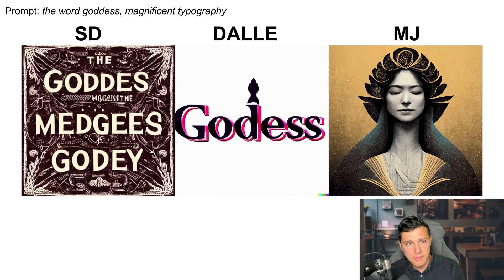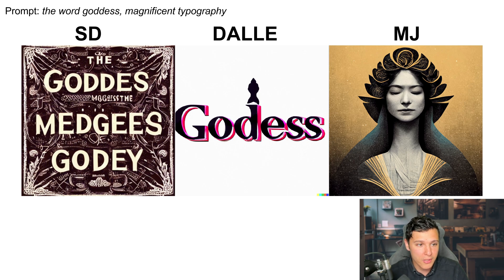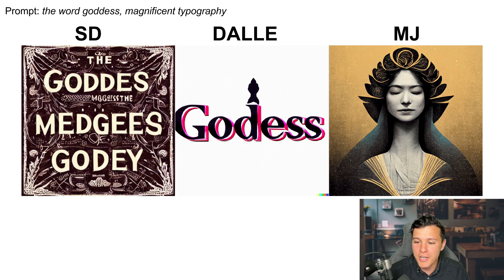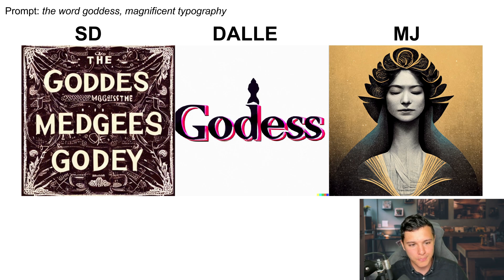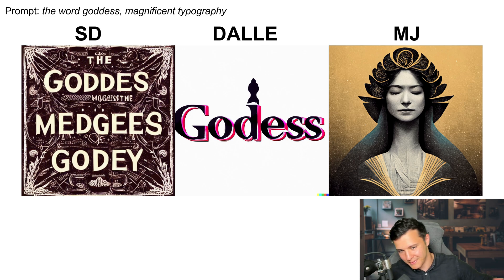The prompt here is 'the word goddess, magnificent typography' — the goal is to check how well each model handles text. Stable Diffusion attempts 'goddess' but it's misspelled, and there are other garbled words like 'Medges' and 'Gade.' DALL-E just spells 'goddess' but misspells it with a single D. Midjourney decides to ignore text entirely and just gives you an image. Midjourney is like 'I want to do something cool, take it or leave it.' DALL-E tries to give you what you want but might not be able to, and Stable Diffusion does its own special version.